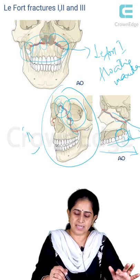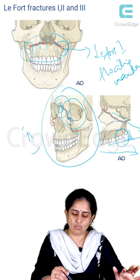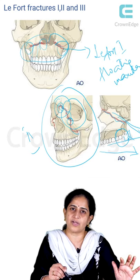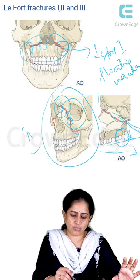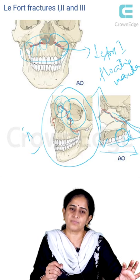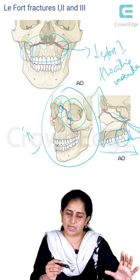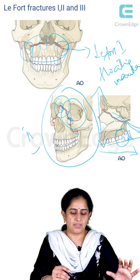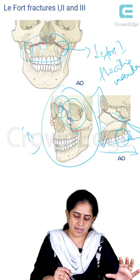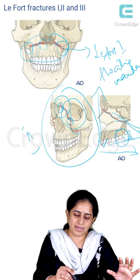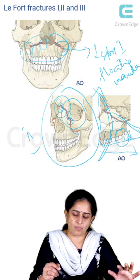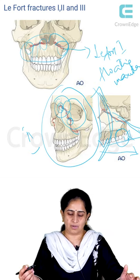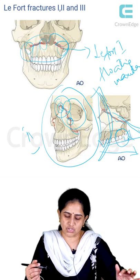Because the maxilla slides downwards and backwards at the 45-degree angulation, the patient's face also becomes elongated. The facial appearance appears elongated. The patient will also have this anterior open bite and what is called a dish-face deformity, as we will see in the succeeding pictures.